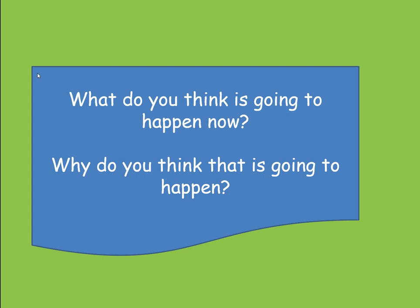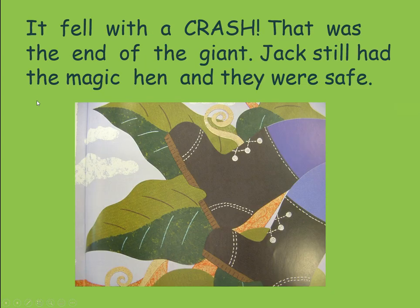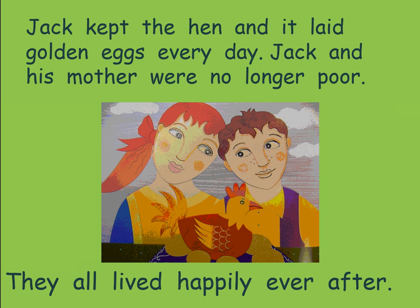So that's the last part of your task for the English lesson today, but I bet you want to see how the story ends. 'Hurry, Jack!' called his mother. She got an axe and chopped down the beanstalk — did any of you think it would be the mum that chopped down the beanstalk? It fell with a crash. That was the end of the giant. Jack still had the magic hen and they were safe. Jack kept the hen and it laid golden eggs every day. Jack and his mother were no longer poor. And you probably predicted this — they all lived happily ever after. Well done, Year One. That's the end of today's English lesson, and tomorrow we'll be looking at you telling the story yourselves.